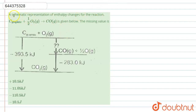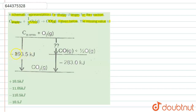A systematic representation of enthalpy changes for the reaction: carbon (graphite) plus half O₂ gas gives CO gas is given below. The missing value is to be found. The term given is: carbon (graphite) plus O₂ gives CO₂. The enthalpy of formation is minus 393.5 kilojoule.